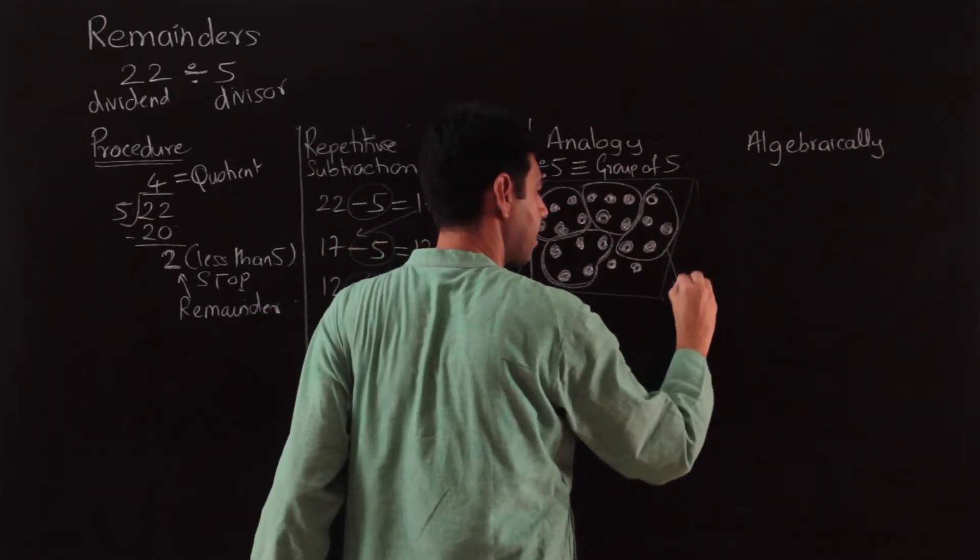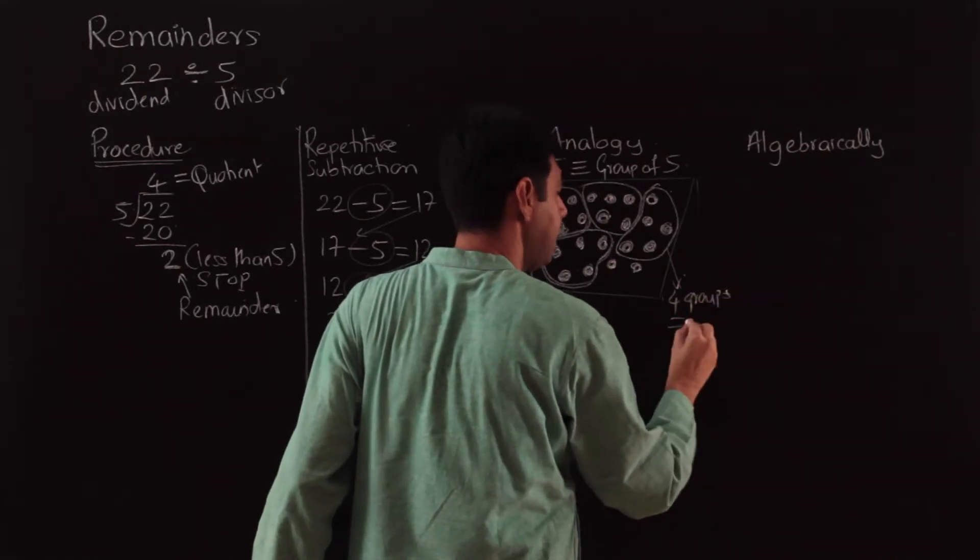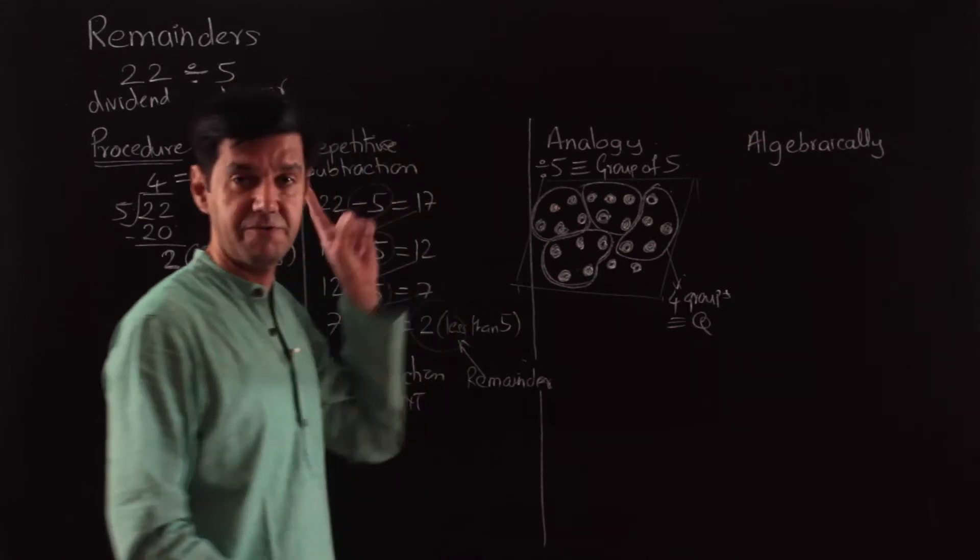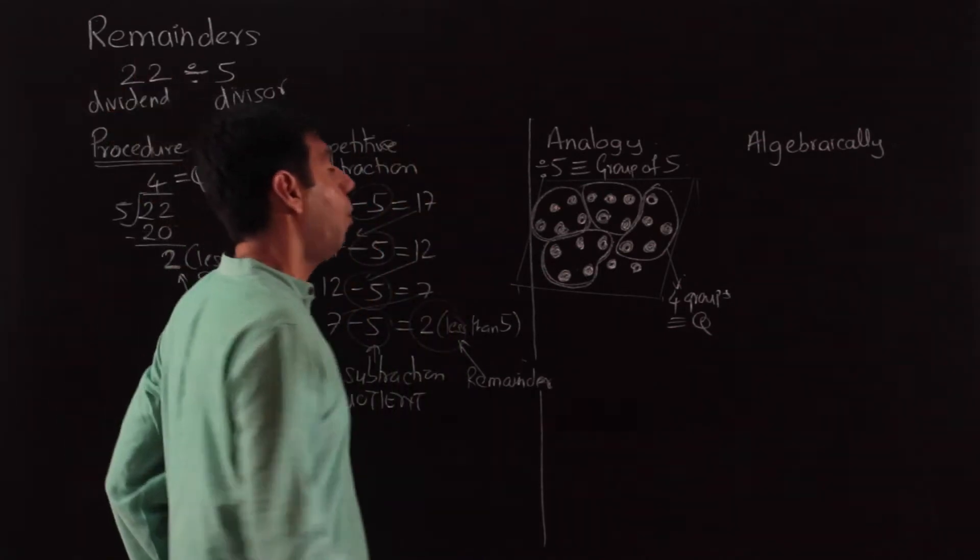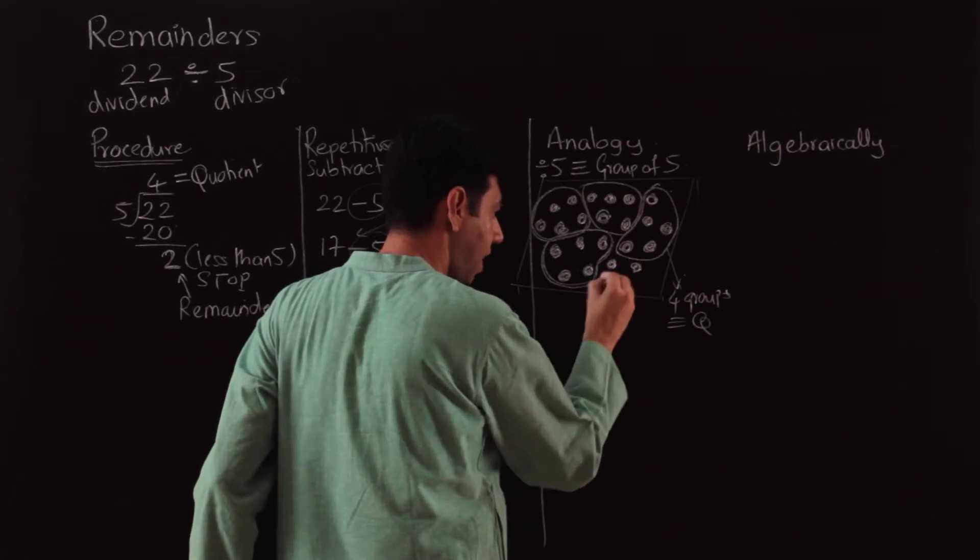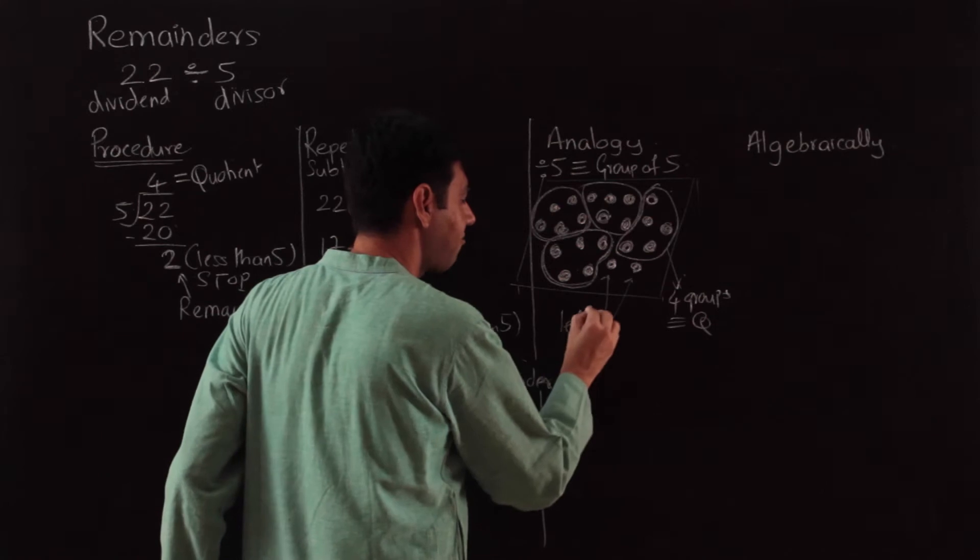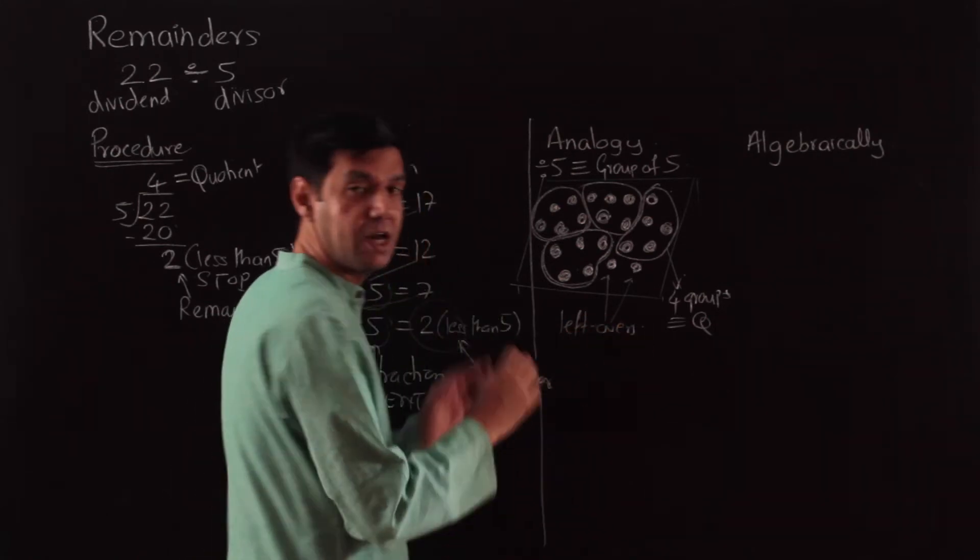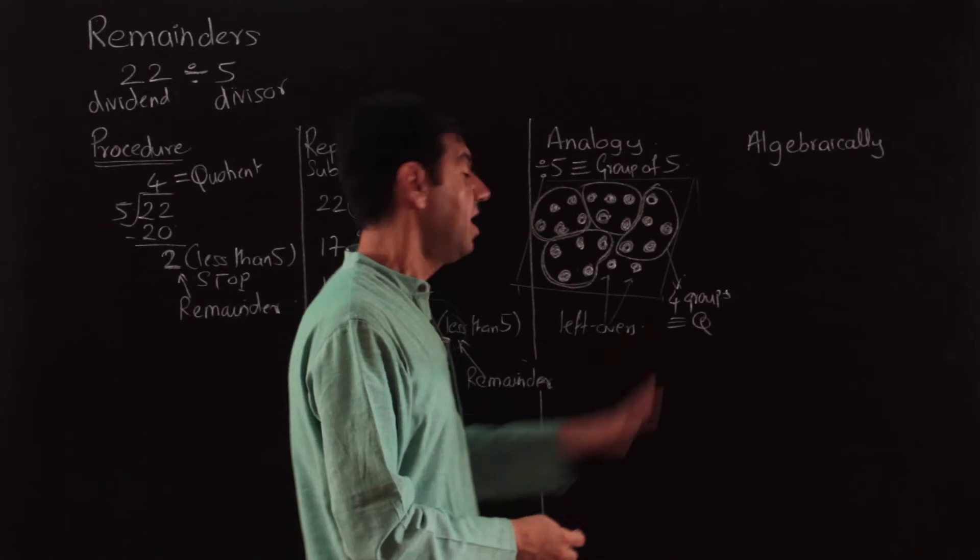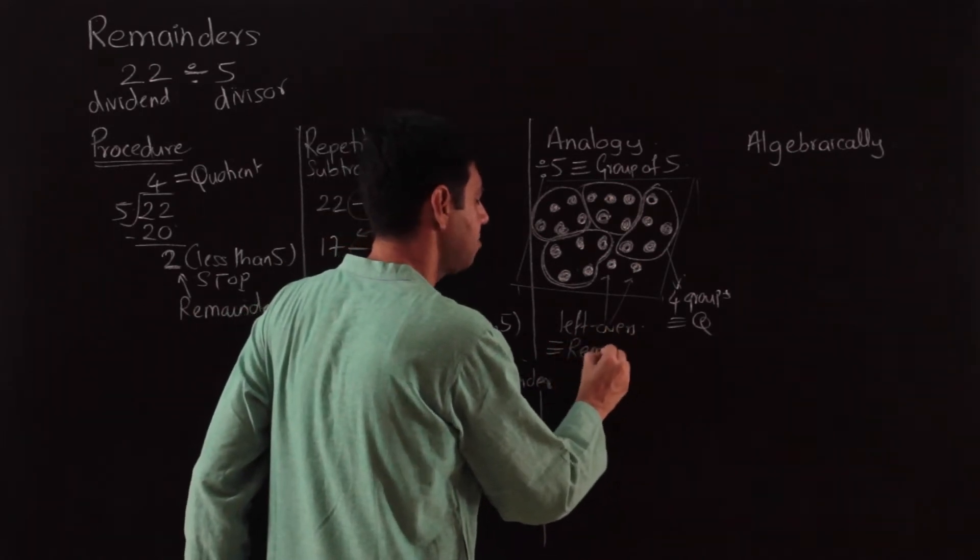You can form 4 groups. These 4 groups is equivalent to your quotient, which I'm not interested in in these type of questions. What I'm interested in is these leftovers. I cannot form another group with them. These are called my remainder—what I'm going to search for.